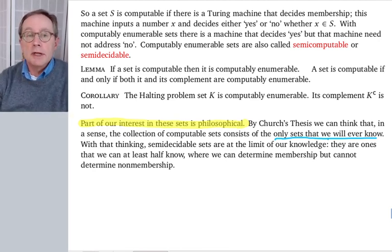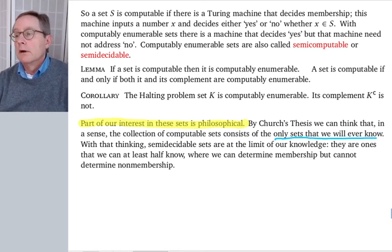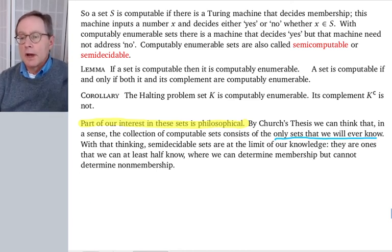So in some sense, semi-decidable sets are the absolute limit of what it is that we can know, what it is that we can ever know. By Church's thesis, we think that this is it. Okay, so we can determine membership, but we can't determine non-membership. Okay. Okay, very good. Thank you.